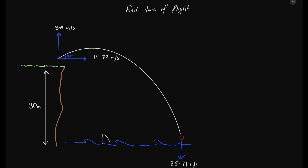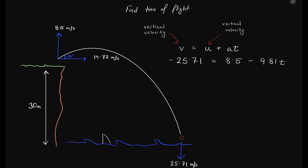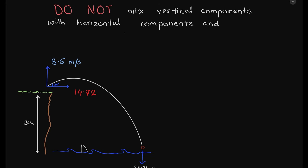The next question might ask: find the total time of flight of the projectile motion. As we have the vertical velocities, we can use v = u + at. Initially the vertical velocity is upwards at 8.5, and finally the vertical velocity is pointing downwards at 25.71 meters per second. The two different vertical values have two different signs depending on which direction they are pointing. You can switch the signs, but make sure they are different as they point in different directions. The answer comes out to 3.49 seconds.